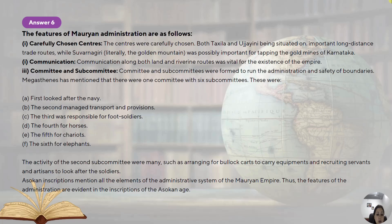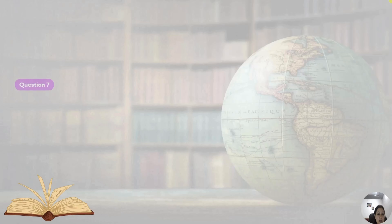Ashokan inscriptions mention all the elements of this administrative system of the Mauryan Empire. Thus the features of administration are evident through the Ashokan inscriptions written on various rocks, pillars, caves and stones, from which we come to know about the Mauryan administration.